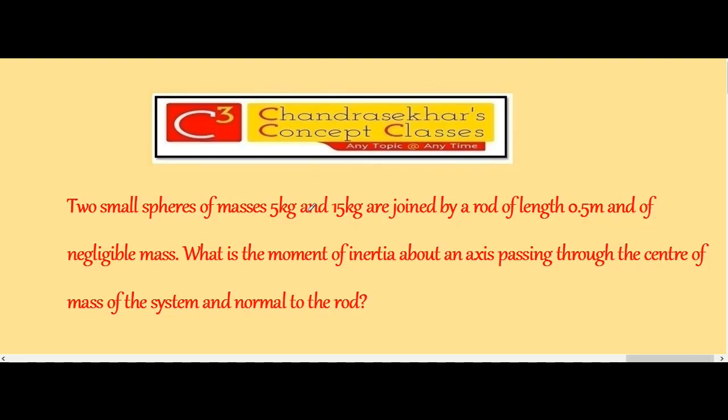Two small spheres of masses 5 kg and 15 kg are joined by a rod of length 0.5 meter and of negligible mass. What is the moment of inertia about an axis passing through the center of mass of the system and normal to the rod?